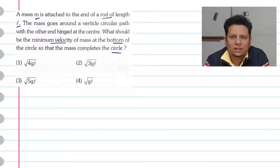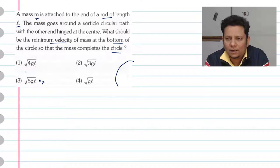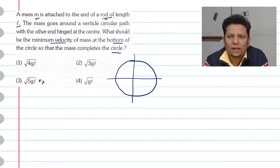Now, students think the answer is 5GL. 5GL will not be the right answer in this case. The key difference is that a rod is not a string.